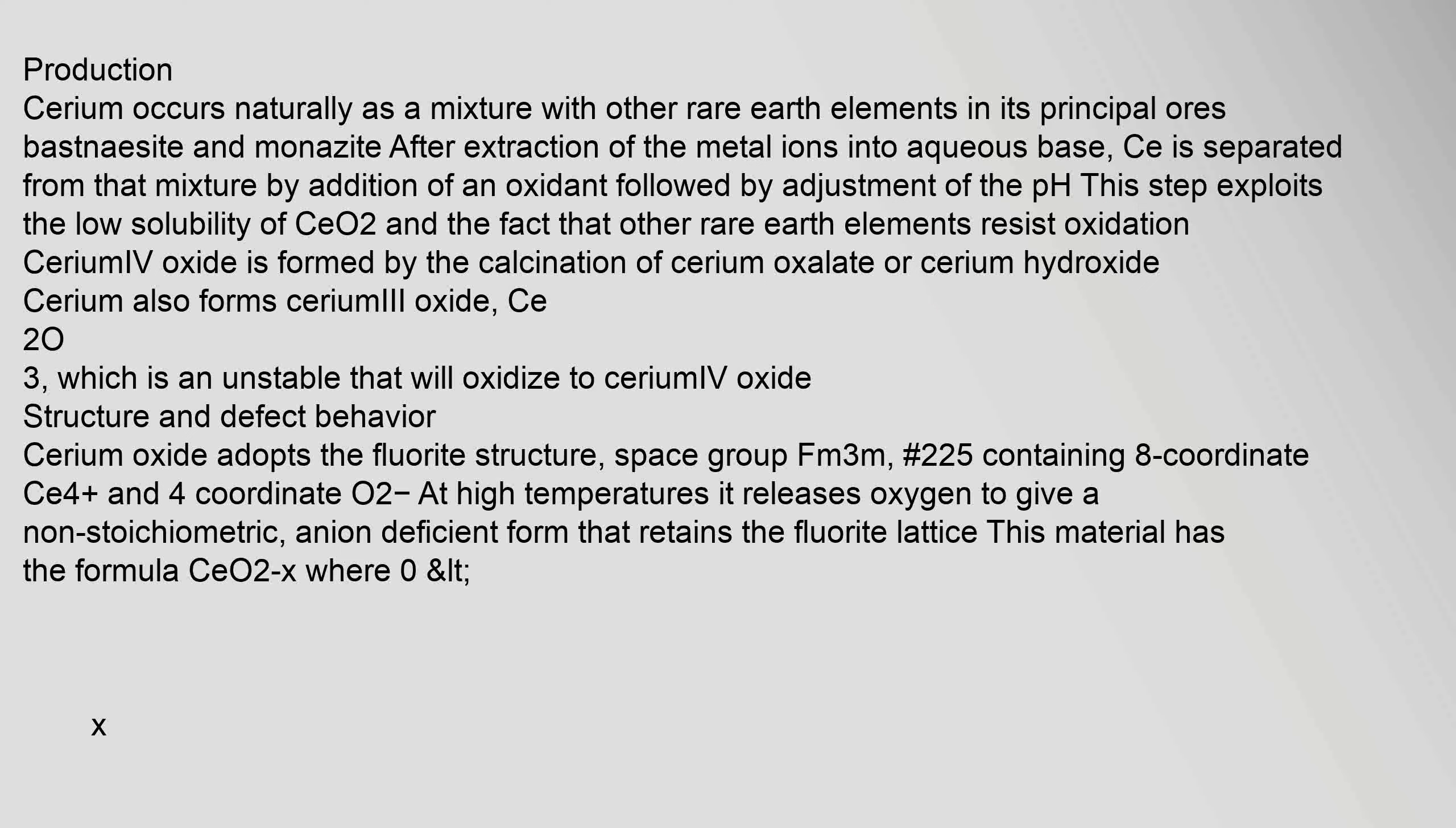Production: Cerium occurs naturally as a mixture with other rare earth elements in its principal ores bastnäsite and monazite. After extraction of the metal ions into aqueous base, Ce is separated from that mixture by addition of an oxidant followed by adjustment of the pH. This step exploits the low solubility of CeO2 and the fact that other rare earth elements resist oxidation. Cerium(IV) oxide is formed by the calcination of cerium oxalate or cerium hydroxide. Cerium also forms cerium(III) oxide, Ce2O3.